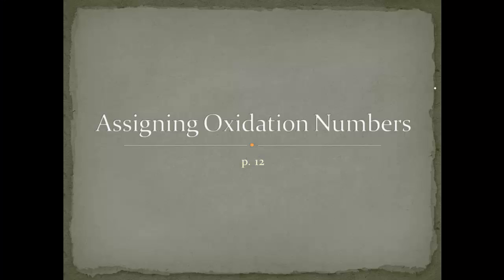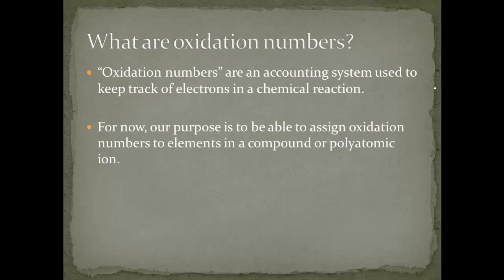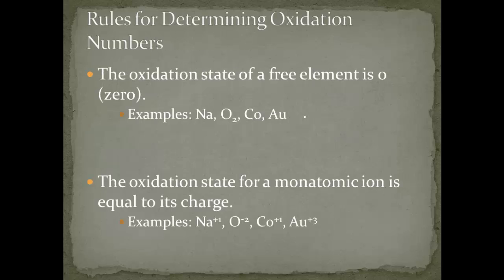Today's lesson is about oxidation numbers, which is probably a brand new concept. Oxidation numbers are basically an accounting system that chemists use to keep track of electrons in a chemical reaction. Eventually we will use these numbers to help us figure out where electrons are going and coming from when a chemical process is happening — for instance, who's losing electrons or who's gaining electrons. For now, our purpose is simply to assign oxidation numbers to elements, compounds, or polyatomic ions.